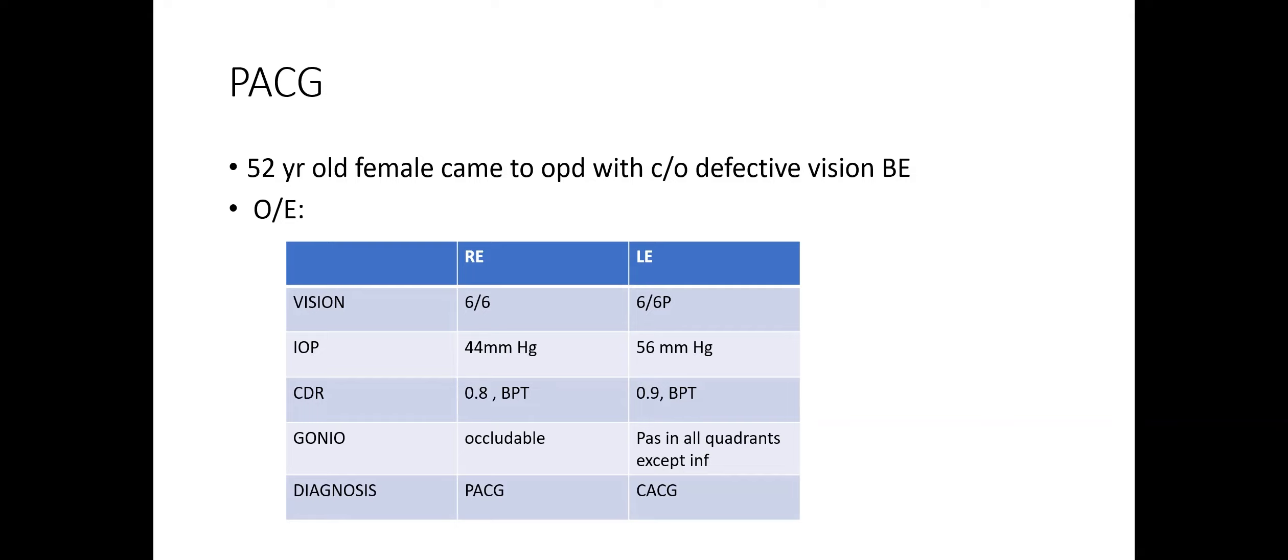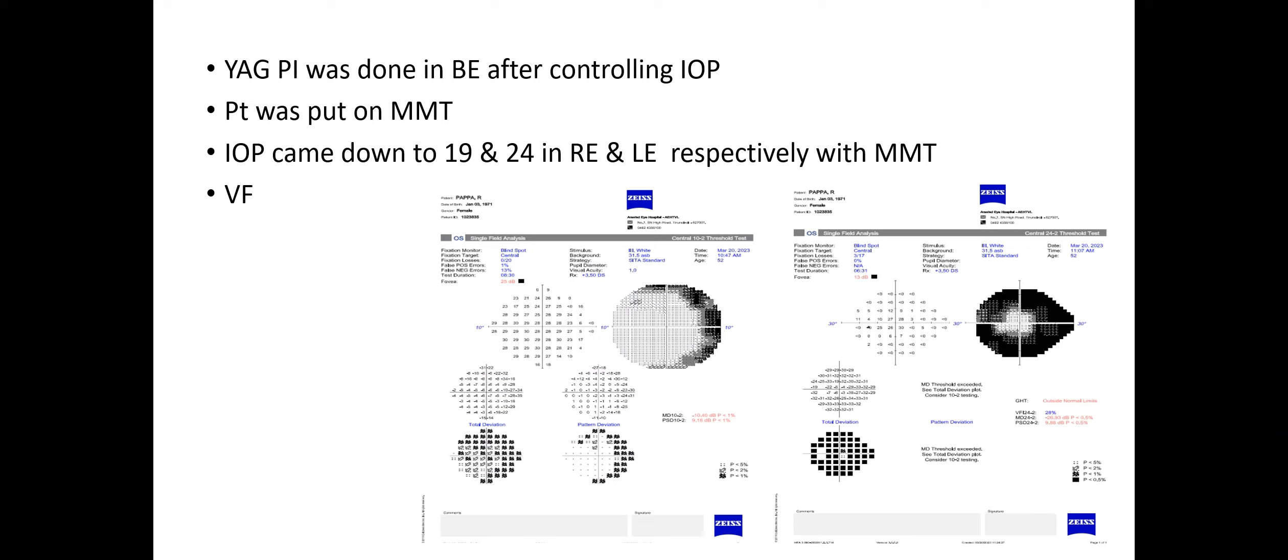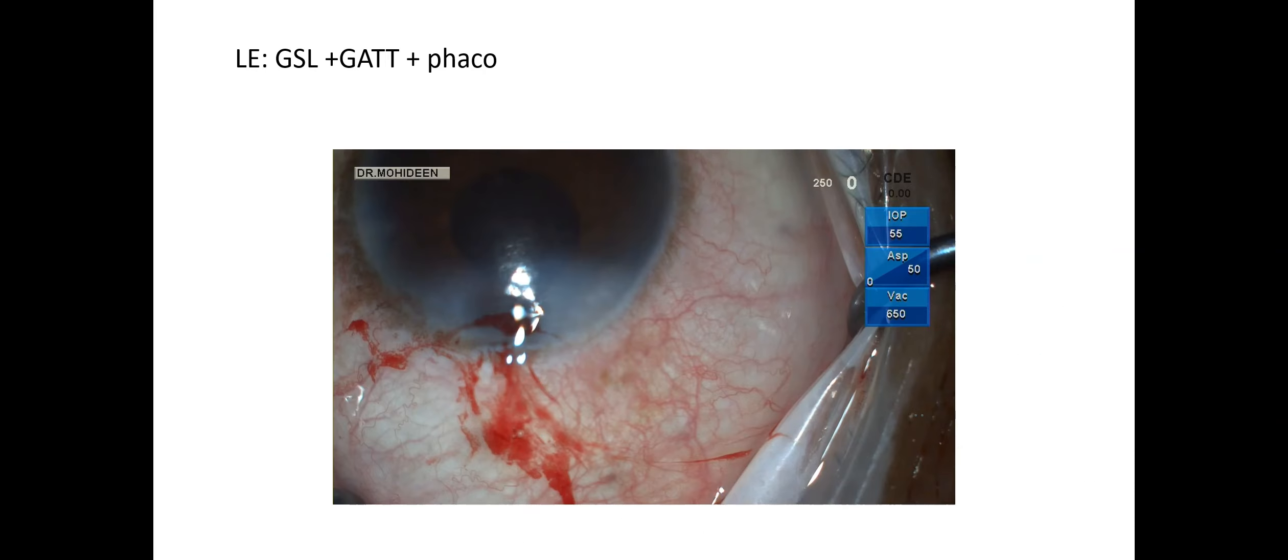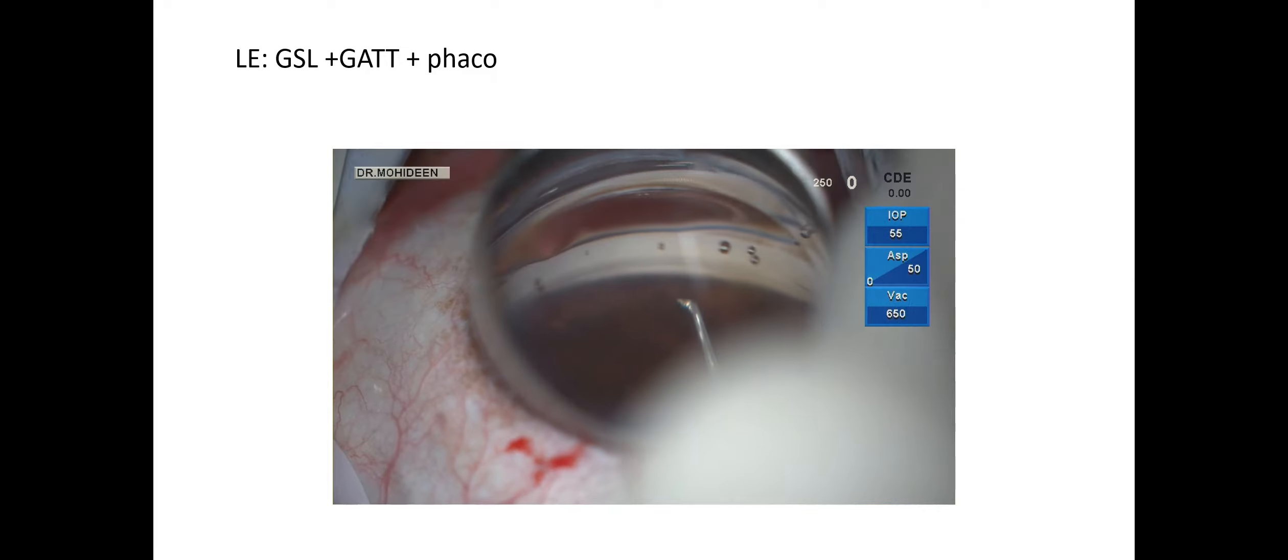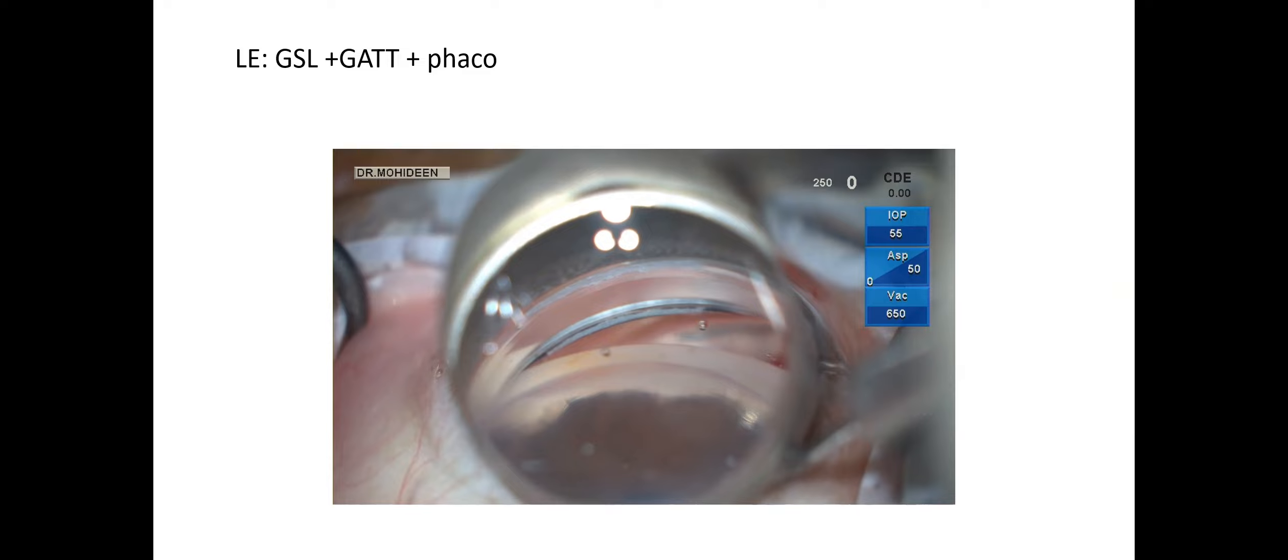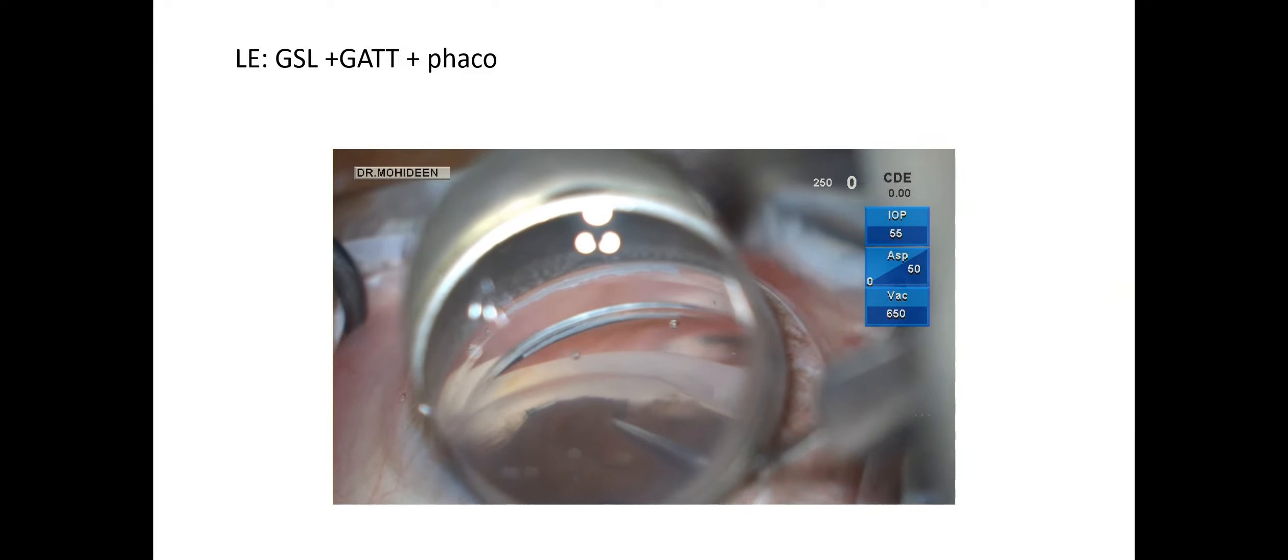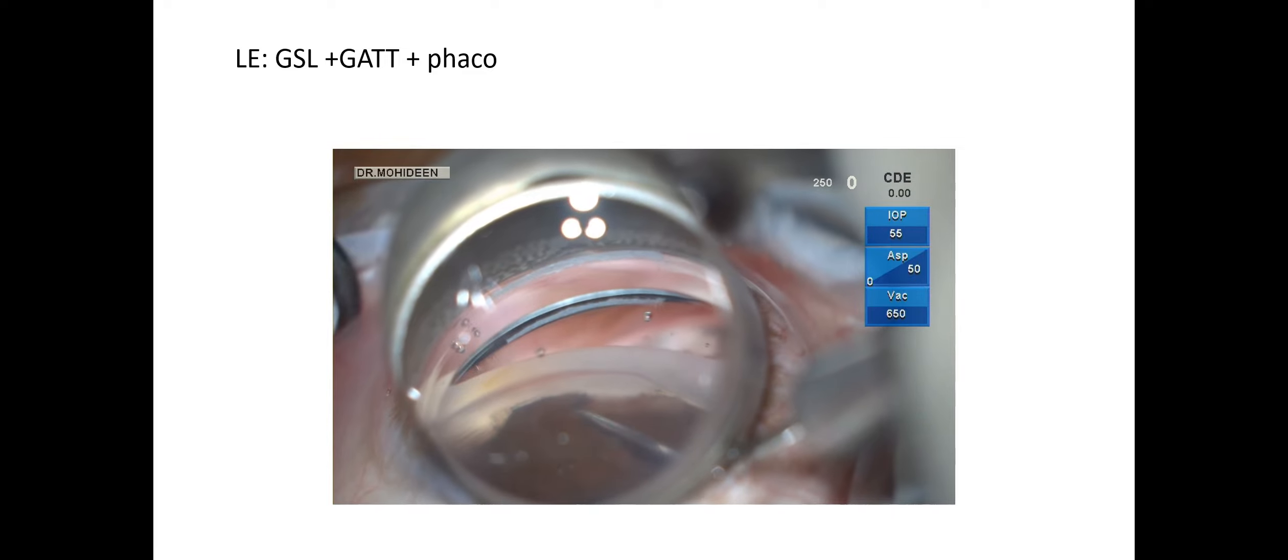This is a 52-year-old female patient who is a known case of angle-closure glaucoma with advanced cupping in both eyes and uncontrolled intraocular pressure. This patient underwent YAG peripheral iridotomy after controlling the intraocular pressure. The patient was started on maximal medical therapy and after adequate control, was planned for goniosynechiolysis with GATT along with phacoemulsification. The goniosynechiolysis was achieved using a Tanito microhook.